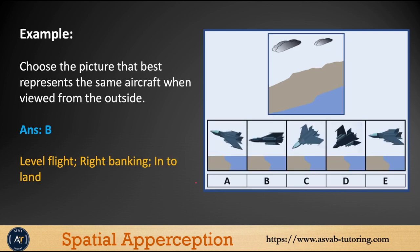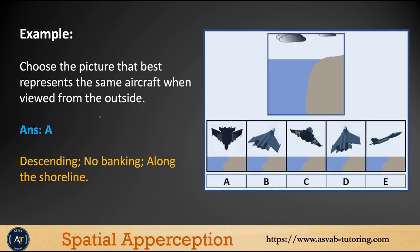The next one: the picture that best represents the same aircraft point of view from outside — you can see the horizon here, meaning level flight with a right bank into the land. The correct answer is B.